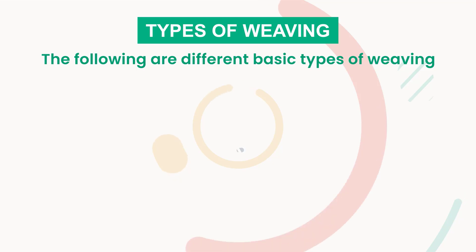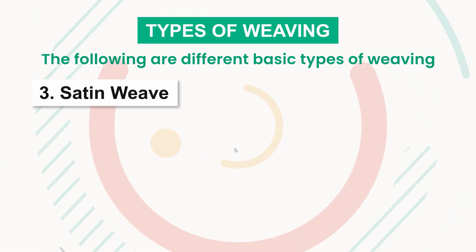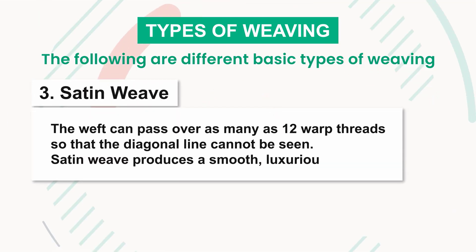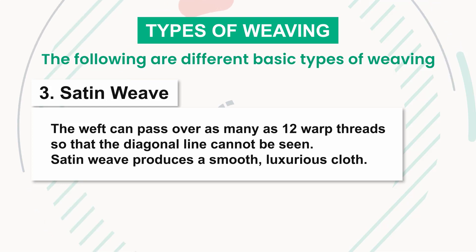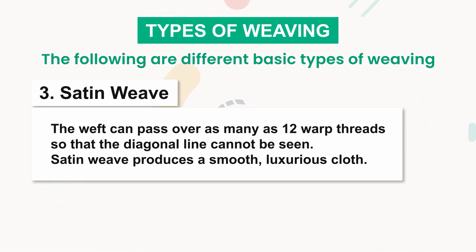Number three: satin weave. The weft can pass over as many as 12 warp threads so that the diagonal line cannot be seen. Satin weave produces a smooth, luxurious cloth.